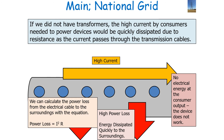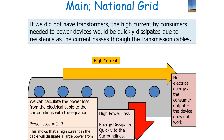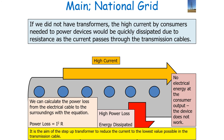We can calculate the power loss from the electrical cable to the surroundings with the equation: power loss equals I squared R. Remember, I must be the I_RMS — the root mean square value — as we are looking at alternating current. This shows us that a high current will dissipate a large power from our cable, and a low current will dissipate little power from our transmission cable.